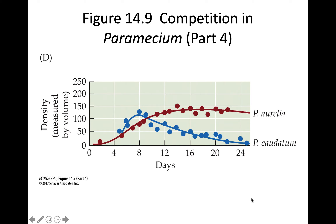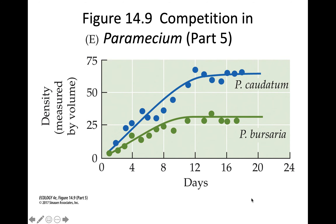However, we see something slightly different when we pair P. caudatum and P. bursaria. When these two were grown together, each species was able to lower its individual carrying capacity, but they were able to coexist. Gause thought this was due to P. bursaria feeding on yeast that settled at the bottom of the test tubes, while P. caudatum fed on the floating bacteria higher up. They were able to separate their food source enough to both exist.